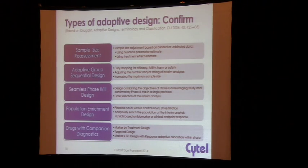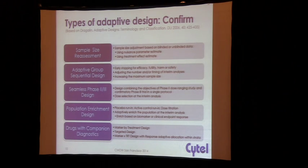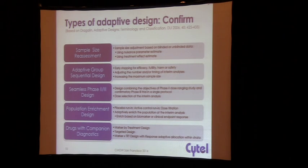In the confirmatory setting, sample size reassessment is probably the biggest thing right now, followed by adaptive dose selections and seamless Phase 2-3 trials. The biggest one is probably group sequential designs, followed by sample size reassessment in a non-blinded manner, adaptive dose selection, and a lot of interest in population enrichment — though there are many questions about it. There's a movement toward population enrichment designs in Phase 2, and then once you've figured out your population, move into Phase 3. There's also a lot of work on combining these things with companion diagnostics and biomarkers.